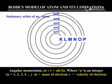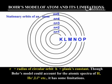M is equal to mass of the electron, V is equal to velocity of electron, R is equal to radius of circular orbit, h is equal to Planck's constant.